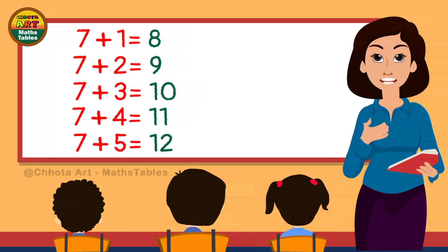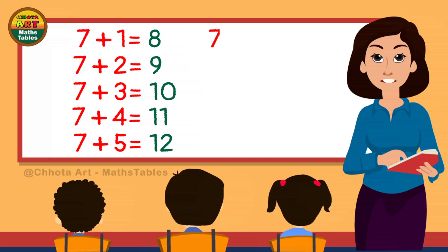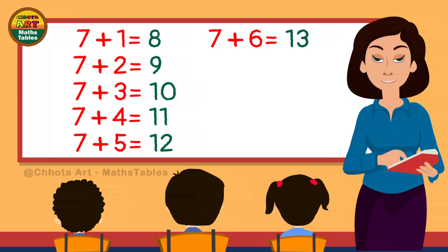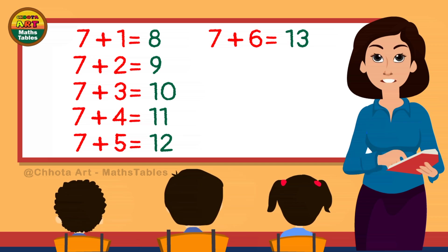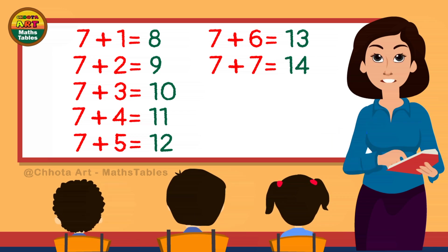7 plus 5 is 12. 7 plus 6 is 13. 7 plus 7 is 14.